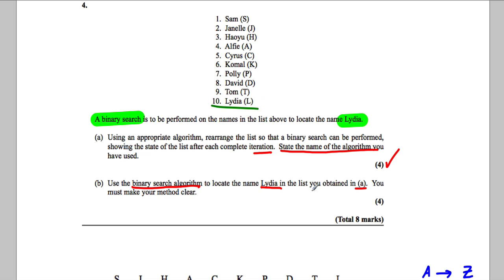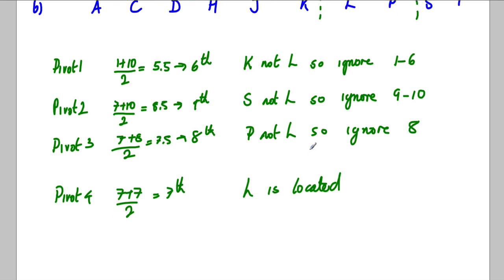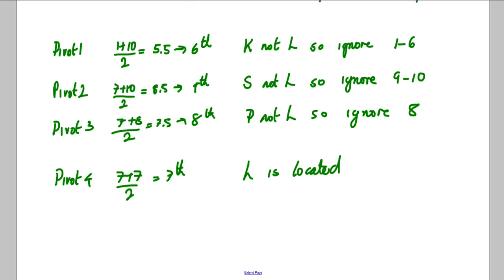Now check L is actually what you're looking for. L was Lydia, and they did ask us to locate Lydia. Sometimes they might ask us to find Lionel and it's not even in the list, so just be careful there. So that's it, we're done for our eight marks.